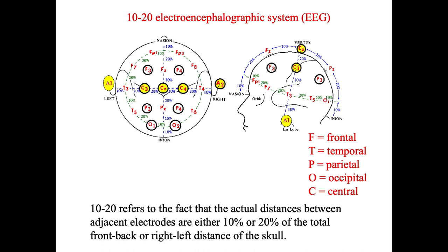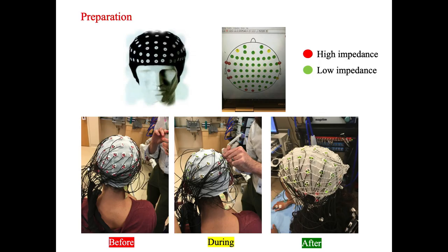There are many different techniques to record the EEG — we can use a cap, for example. As shown in this slide, we use a 64-channel cap to do the EEG recording. A very important step is the preparation of the cap or electrode, which is done to reduce the impedance of the electrodes. In this slide, the red color means very high impedance, and the green color means lower impedance, which we can use for recording.